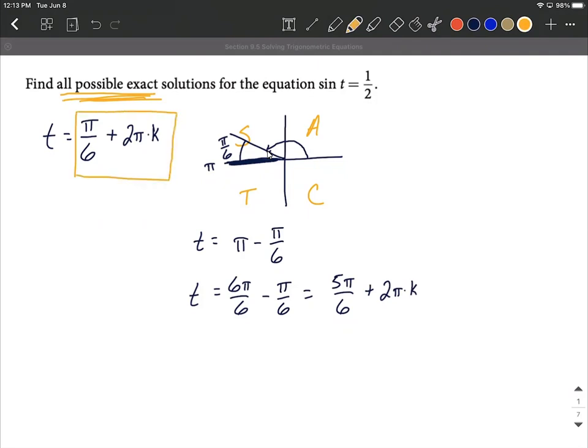And this will represent all of the possible solutions. So pi over six plus two pi k, or five pi over six plus two pi k.